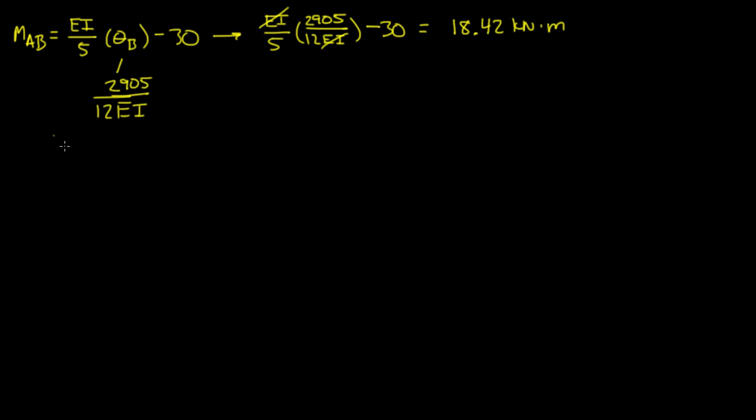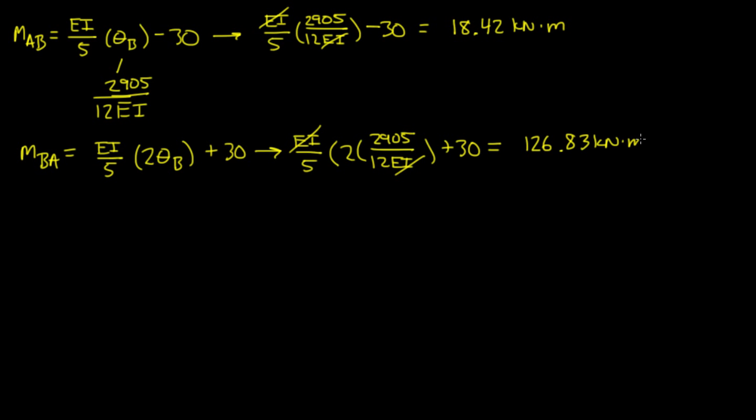Now M_BA was equal to EI over 5, 2 theta b plus 30. If we plug in theta b, EI over 5, 2 times theta b, 2905 over 12EI, and that's plus 30. You solve that out, the EIs again cancel out. You get 126.83 kilonewton meters.